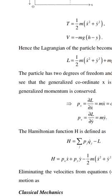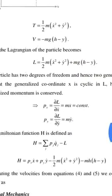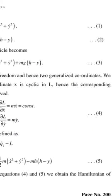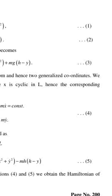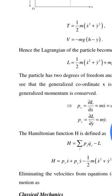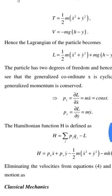We see that the generalized coordinate x is cyclic in the Lagrangian. Hence, the corresponding generalized momentum is conserved. Px = ∂L/∂ẋ = mẋ = constant.